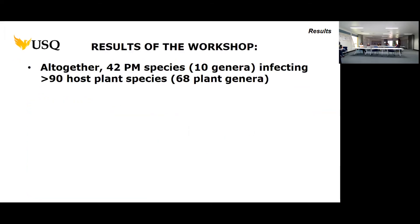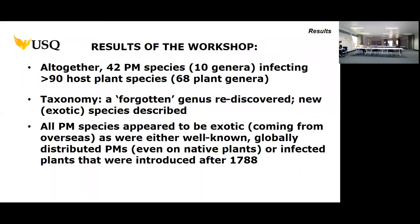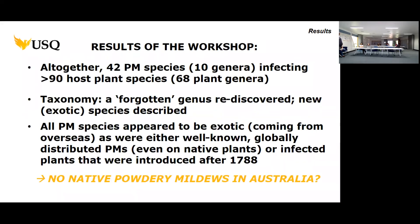What are the results of the workshop? Altogether, we were able to list only 42 species and 10 genera of powdery mildew in Australia — and that's not much. We did a little taxonomy: we rediscovered a genus described long ago and then forgotten, and we described a few new species. However, all other powdery mildew species identified during the workshop and previously, and everything available in GenBank, is exotic — introduced from overseas.